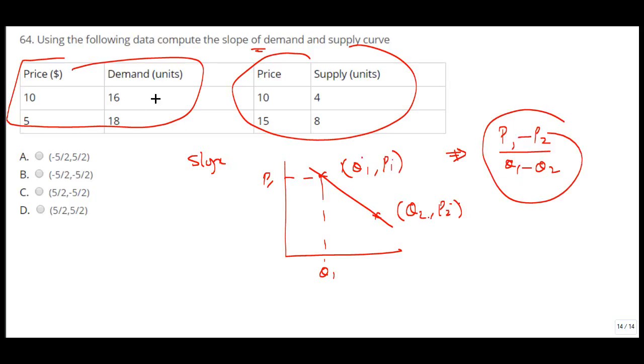So what we can say is this is your p1 p2 q1 q2. So p1 minus p2 it is 10 minus 5 divided by q1 minus q2 16 minus 18. So it will be minus 5 by 2. So because this is 16 minus 18 is minus 2, 10 minus 5 is plus 5. So it is minus 5 by 2. So the slope of the demand curve is negative.